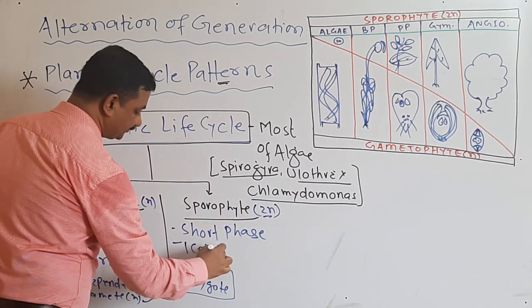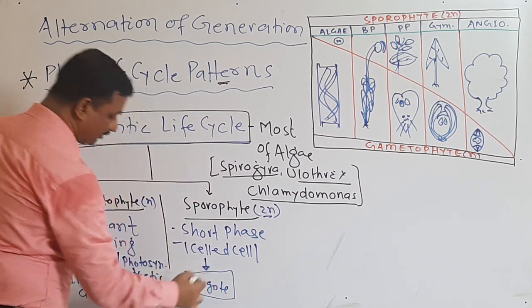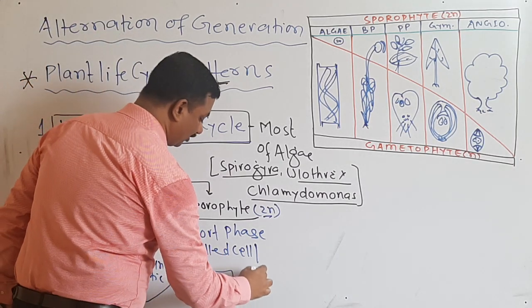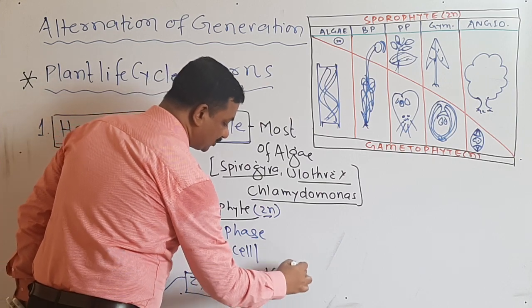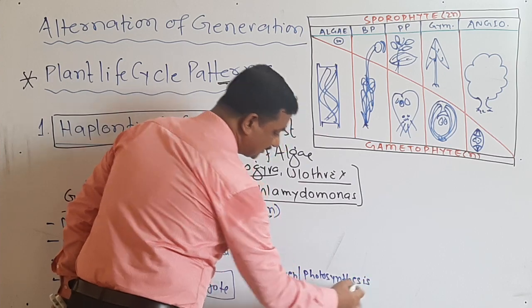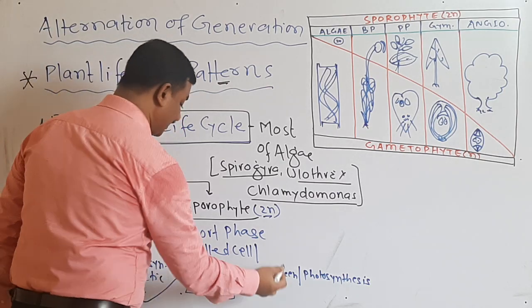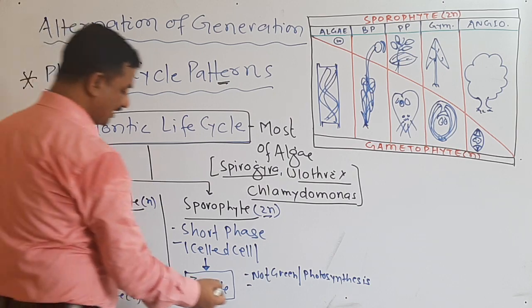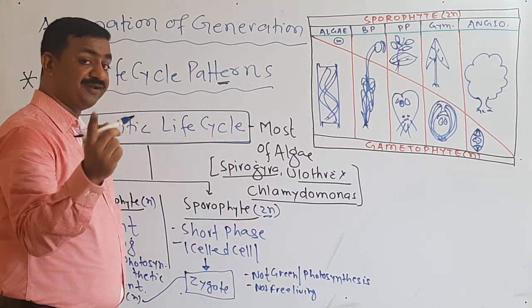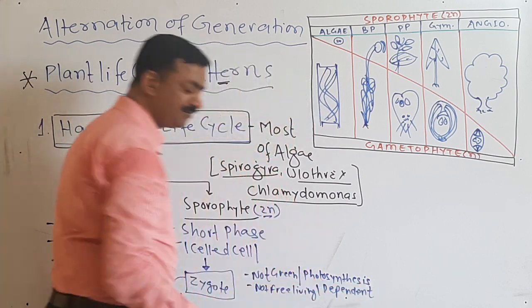This single cell is the zygote. Since this zygote is not green, there will be no photosynthesis. Since there is no photosynthesis, they need nutrition for their survival — they will depend upon the gametophyte. So it is not free living; since not free living, it is dependent.